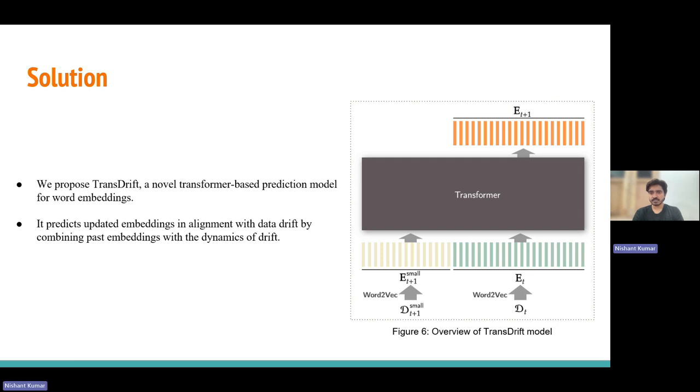As shown in Figure 6, the model takes the word embedding ET trained on the previous data distribution, along with embedding ET+1 small, trained on a small subset of data from the updated distribution if new data is available. Subsequently, the model predicts the word embedding ET+1 representing words aligned with the new data distribution.